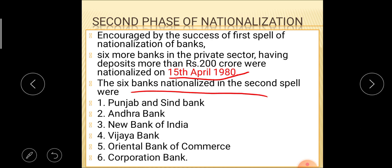The six banks nationalized during the second phase were: Punjab and Sind Bank, Andhra Bank, New Bank of India, Vijaya Bank, Oriental Bank of Commerce, and Corporation Bank. These six banks were nationalized during the second phase of nationalization. Nowadays, a total of 20 banks have been nationalized.